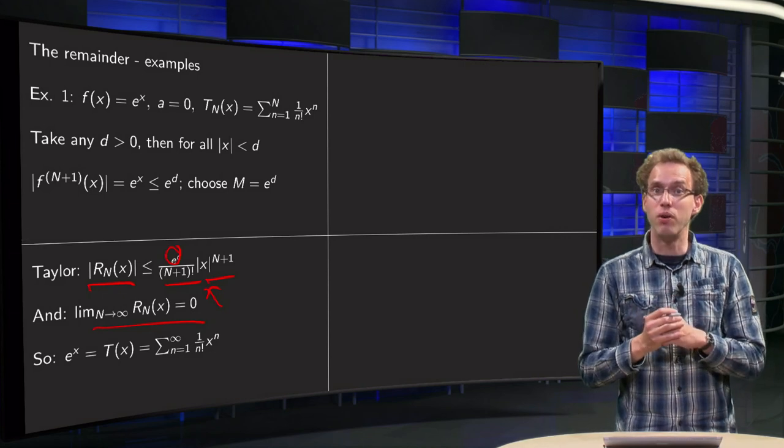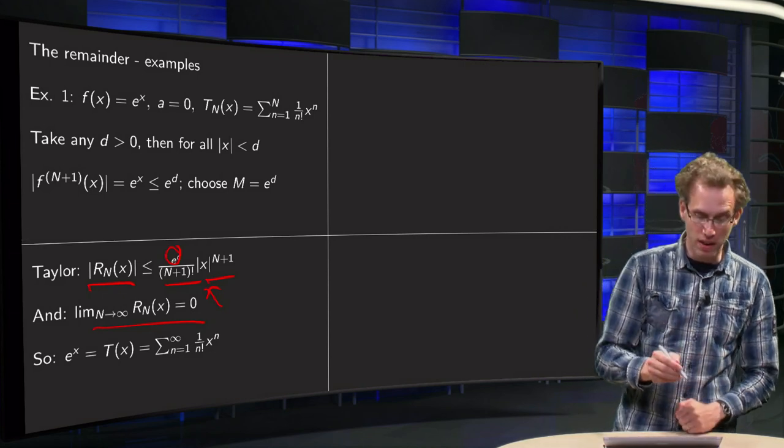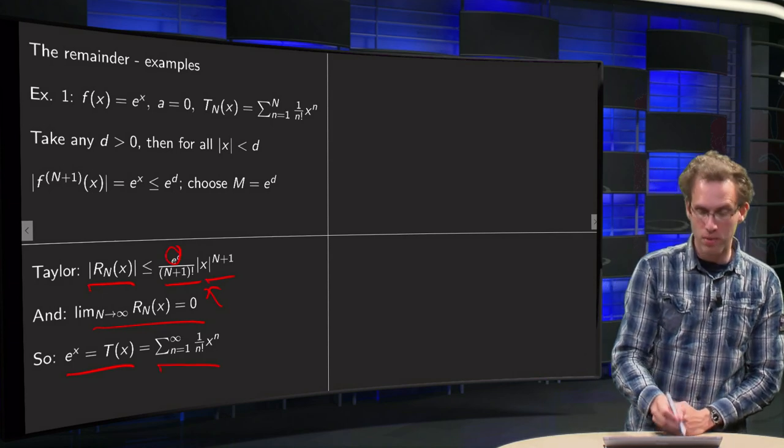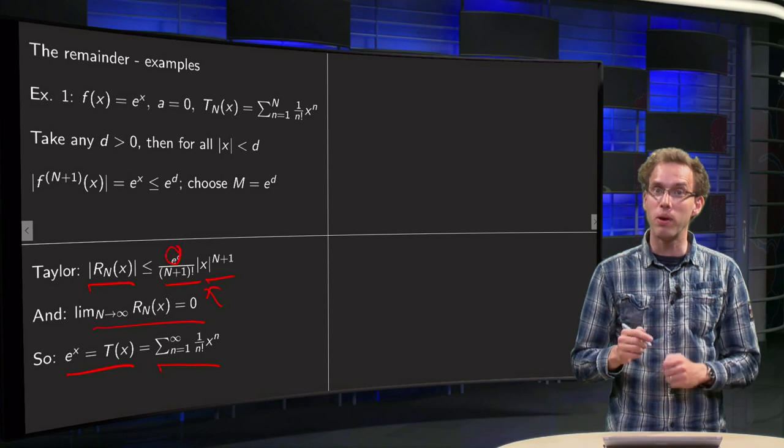And then we know, according to the theorem, that in fact the exponential function is equal to its Taylor series, sum of 1 over n factorial times x to the power N.